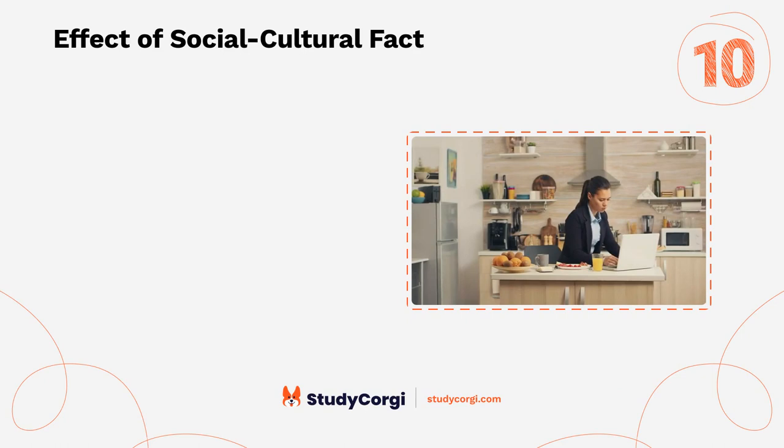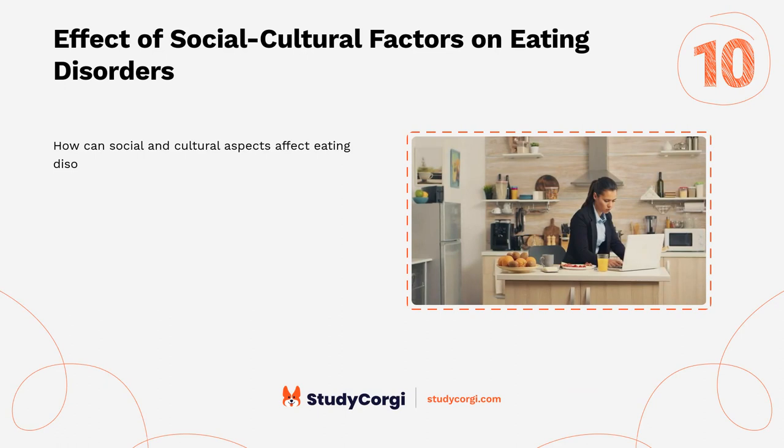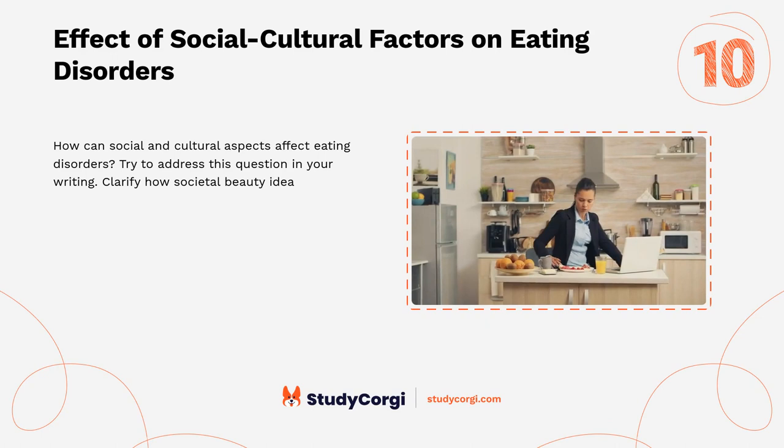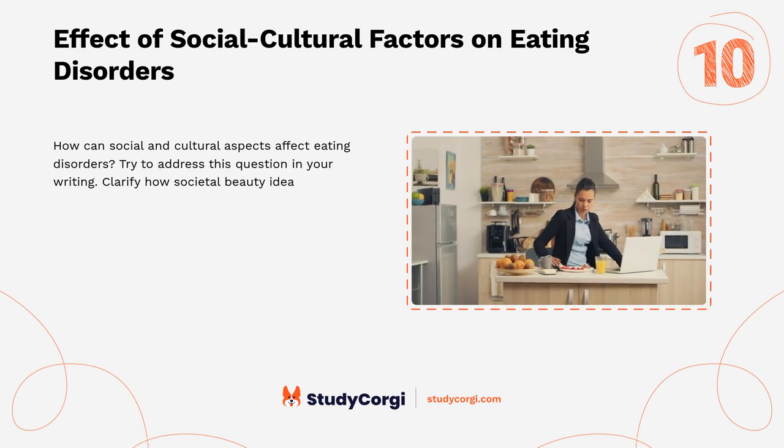Affective social-cultural factors on eating disorders. How can social and cultural aspects affect eating disorders? Try to address this question in your writing. Clarify how societal beauty ideals, media influence, and cultural expectations lead to developing and strengthening disordered eating behaviors. Highlight the importance of a comprehensive approach to prevention, early intervention, and treatment that addresses these underlying factors.